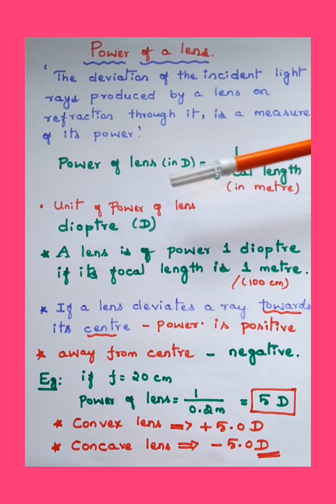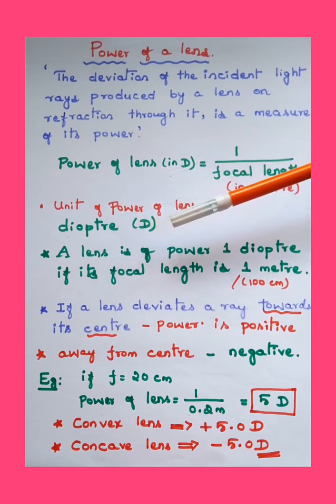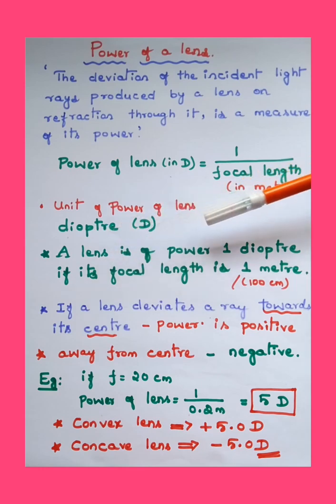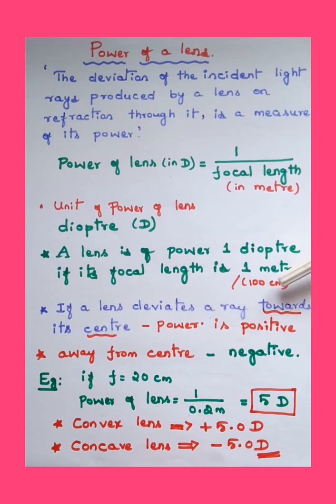A lens is of power one diopter if its focal length is one meter or hundred centimeters. But when you substitute this value for calculation, you must substitute in meter only. You might have observed that while giving prescriptions to a patient, an optician does not quote the focal length but he will quote the power of the lens.